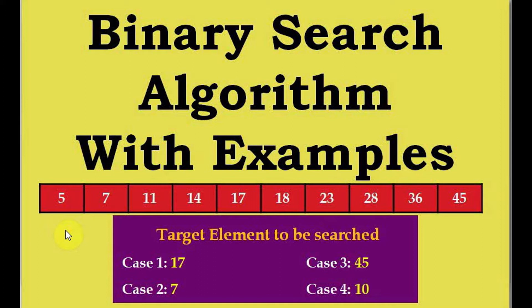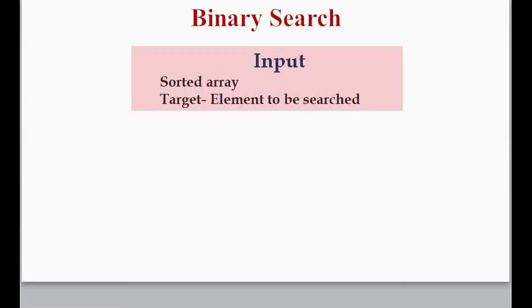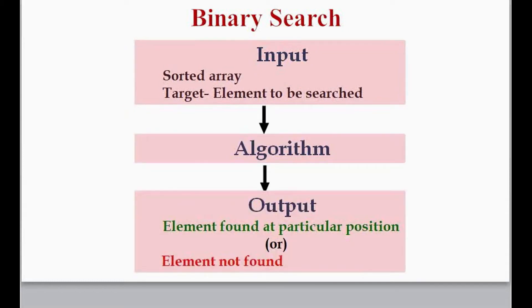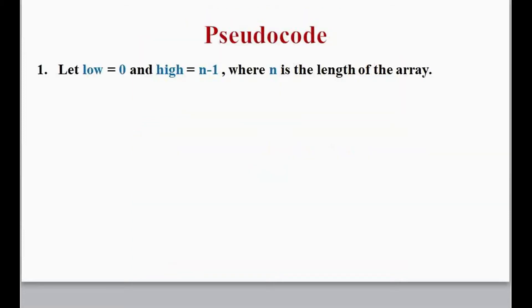For any algorithm we need an input to be processed and then an output. The input here is the sorted array arranged in ascending order, and the target element to be searched. That is fed to the algorithm and we get the output — either 'element found at a particular position' or 'element not found at all.' This is the pseudocode.